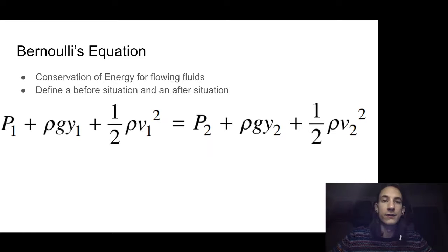So Bernoulli's equation is conservation of energy for flowing fluids. What we do is define a before situation, before the pipe changed, or the height changed, or the speed changed, or the area of the pipe. We define before, and then we look at after. What was the pressure before? What height was it at before? How fast was it going before? What pressure is it at after? What height is it at after? And what's its speed after? We know that these have to shift around so that everything can be conserved.